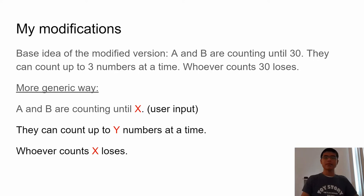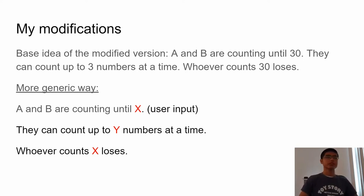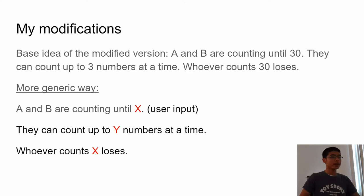The project I'm making is a modified version. The basic idea is the same. In my modified version, A and B are counting up until 30 and they can count up to three numbers at a time. Whoever counts 30 loses the game. This is a game I played when I was little and I wanted to make something similar. More generically: A and B count until X, which is user input; they can count up to Y numbers at a time, also user input; and whoever counts X loses the game.